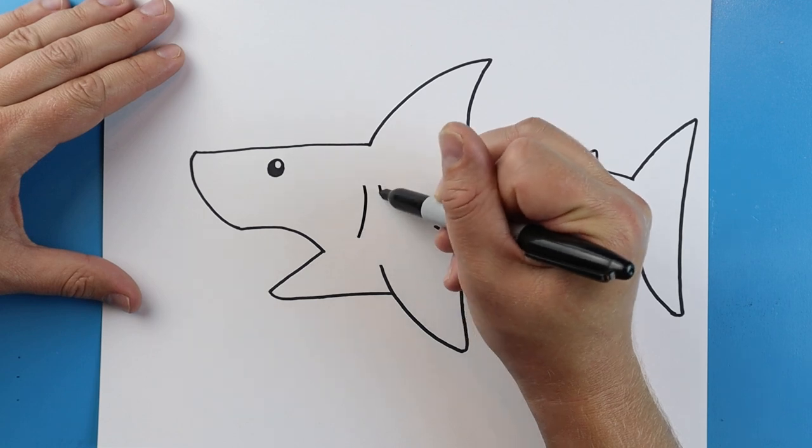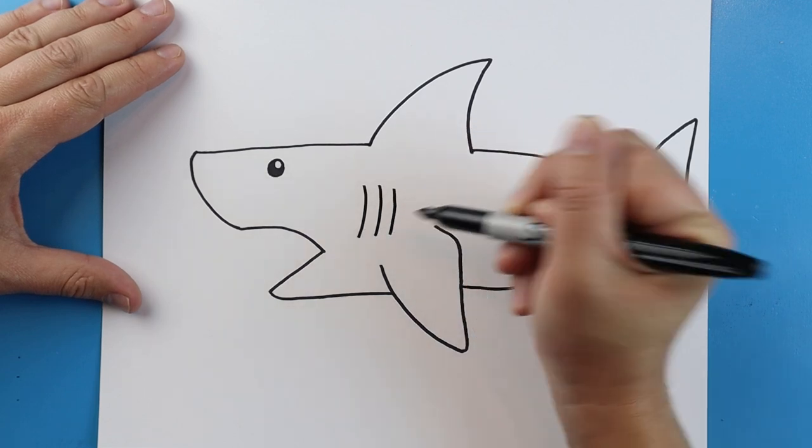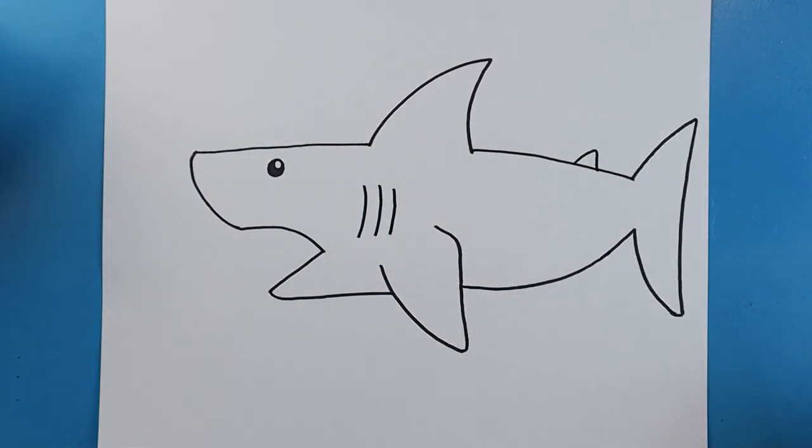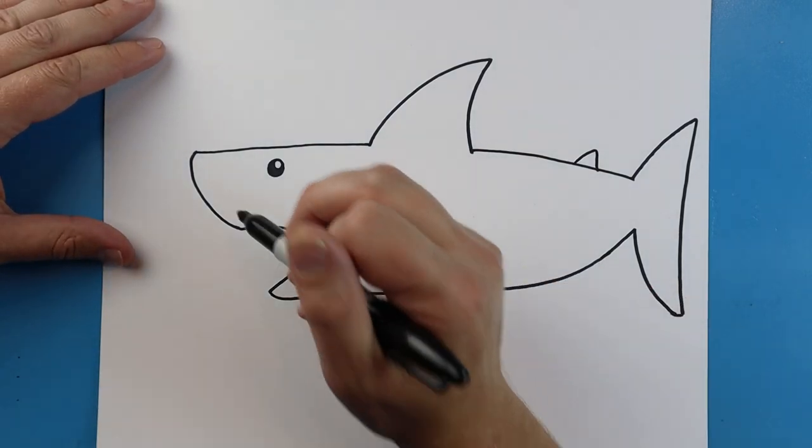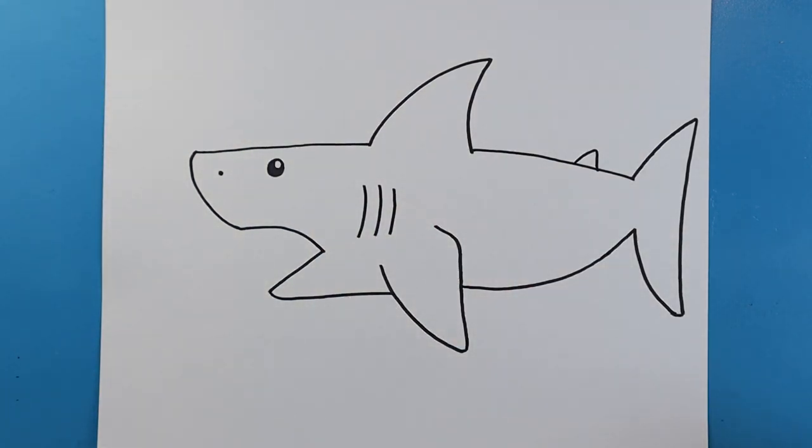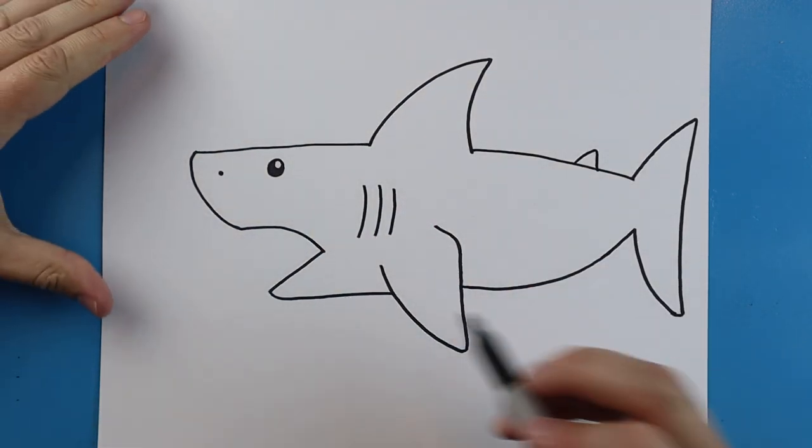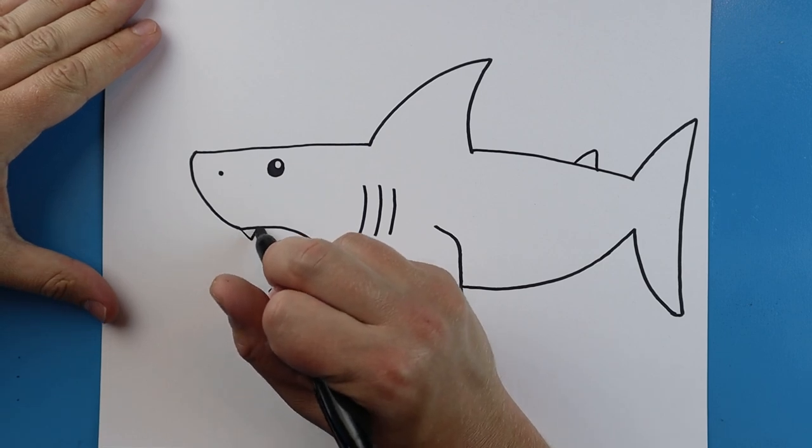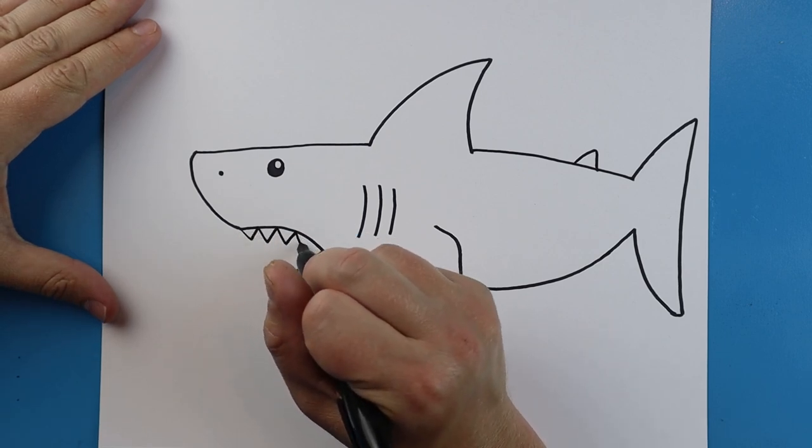Right here I'm going to add three little lines for some gills. And right here we'll add a little black dot for the nose. Right here we're going to make some big sharp teeth.